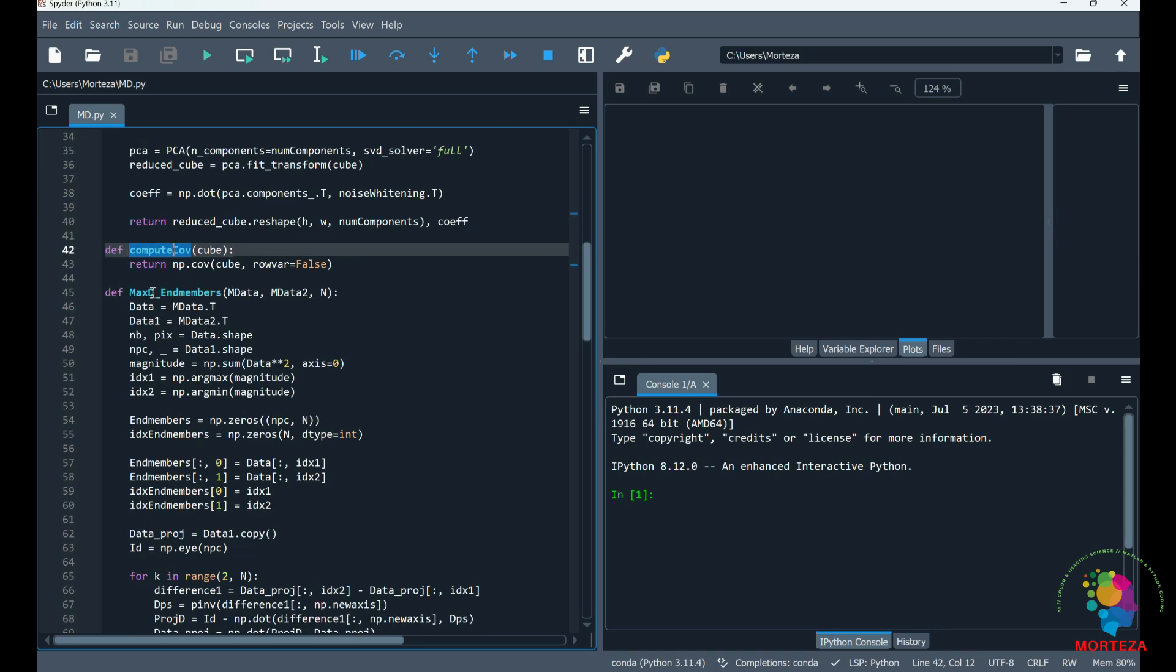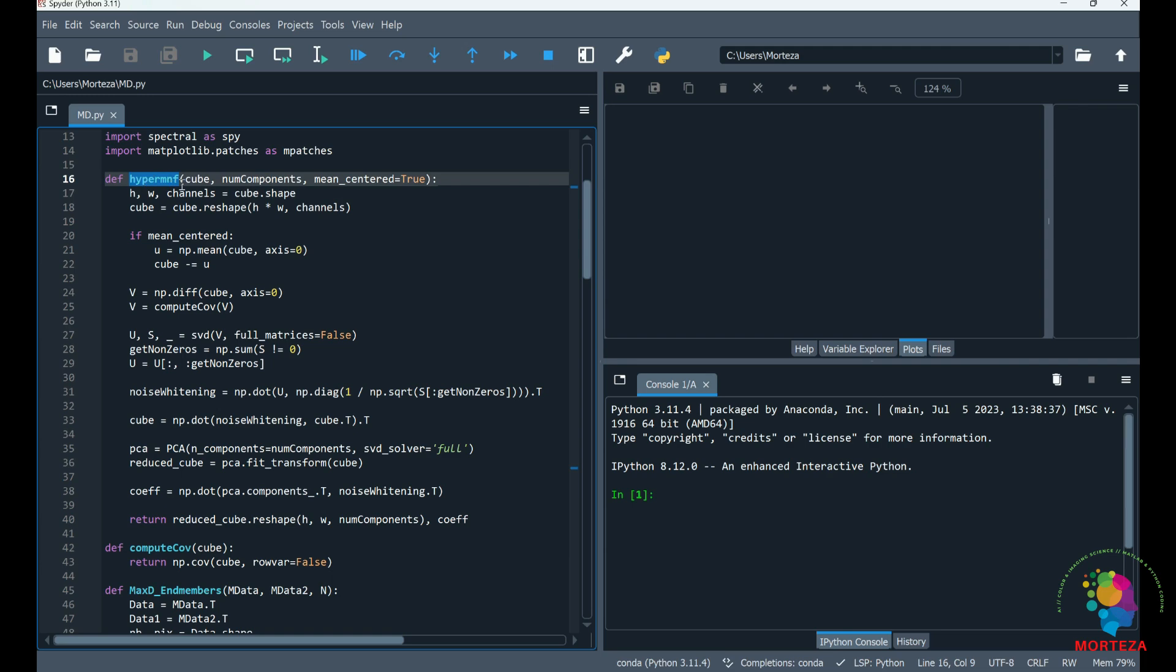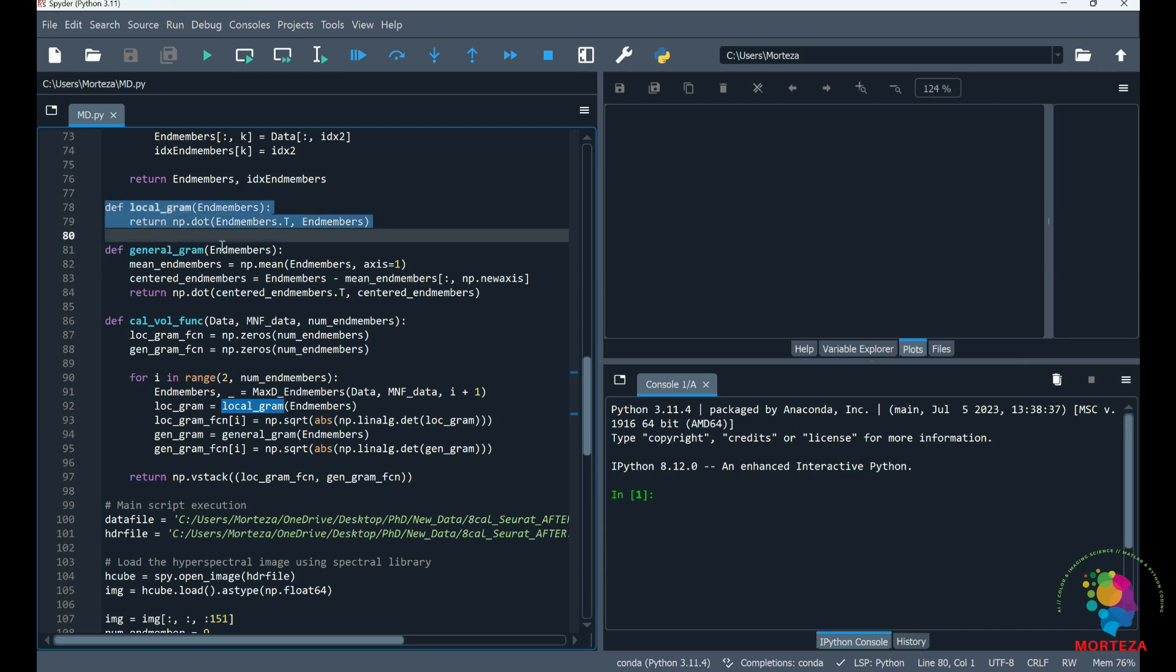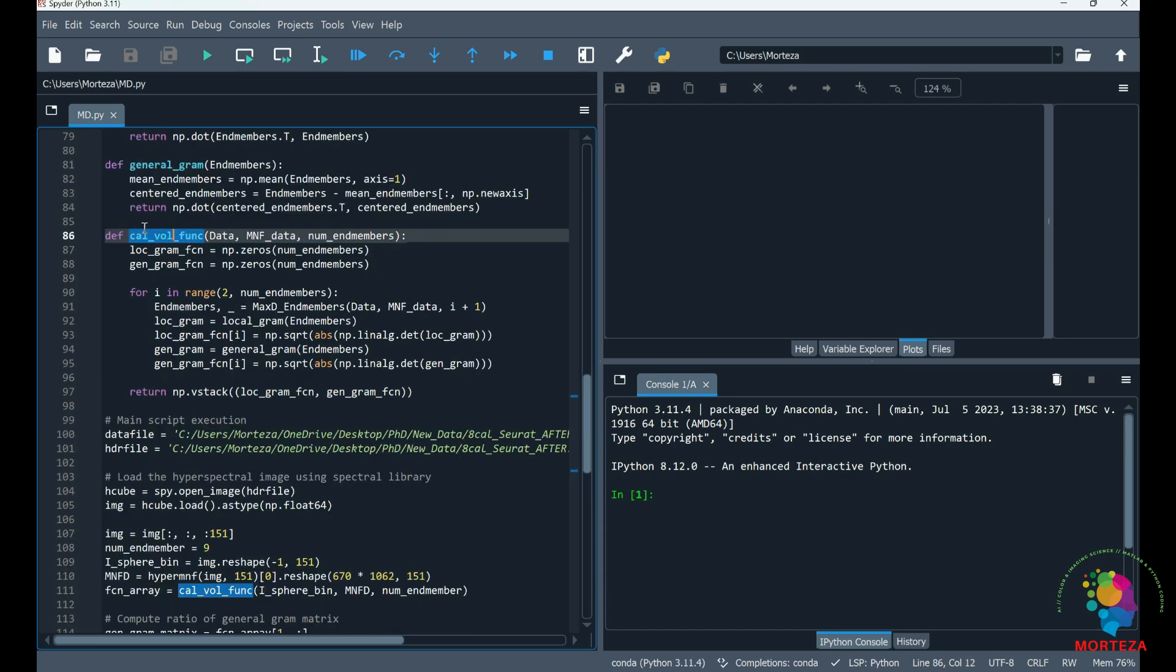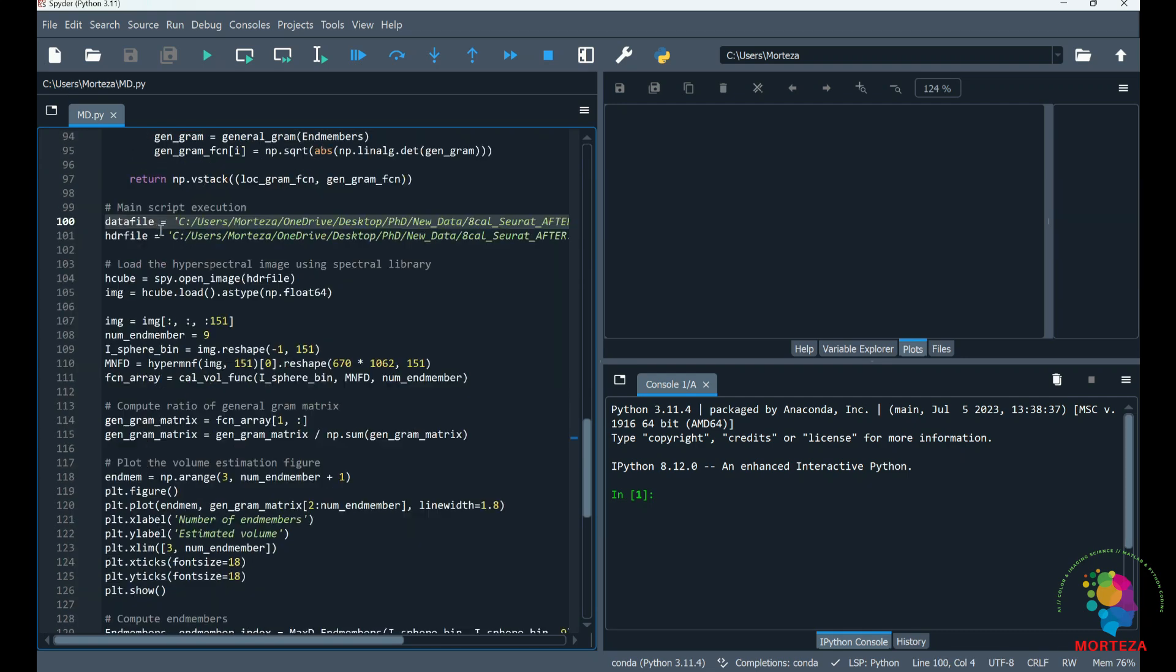These are the libraries that we need, and these are the functions: hyper_MNF_compute_cov, which computes the covariance; max_n_members, which uses maximum distance to compute the end members; and hyper_MNF, which uses maximum noise fraction to compute the principal components.